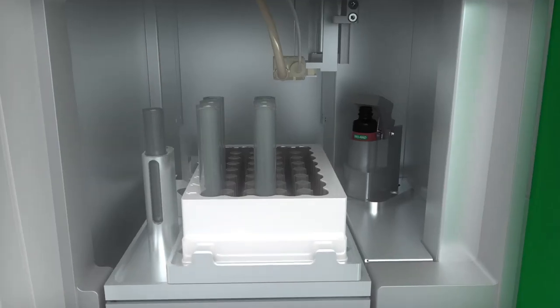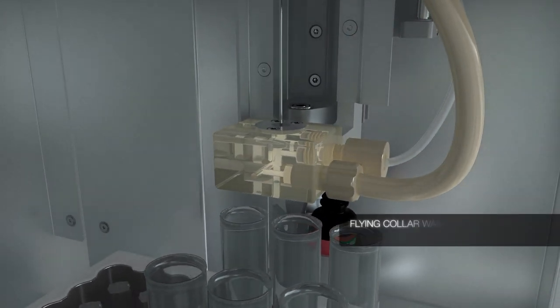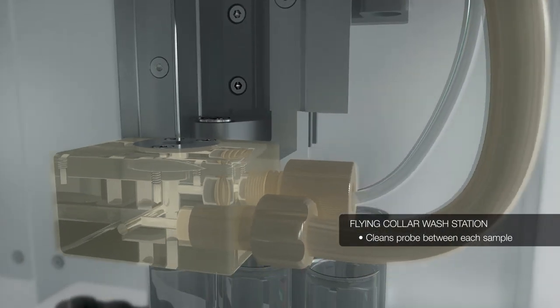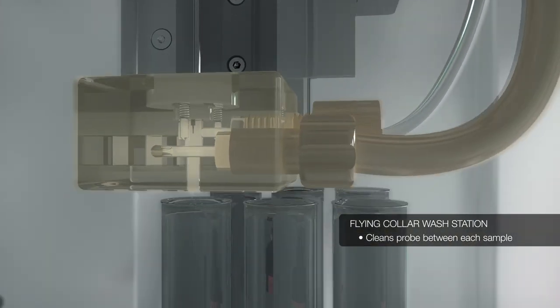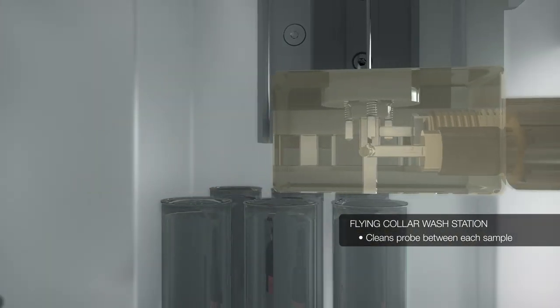The ZE5 cleans the probe between each sample in both high throughput and standard mode with its flying collar wash station. The wash station is positioned around the probe, which is quickly cleaned inside and out on the fly, before continuing to the next sample.